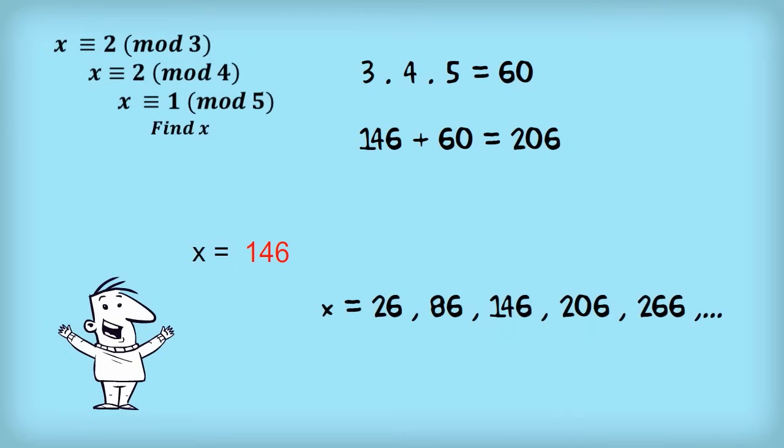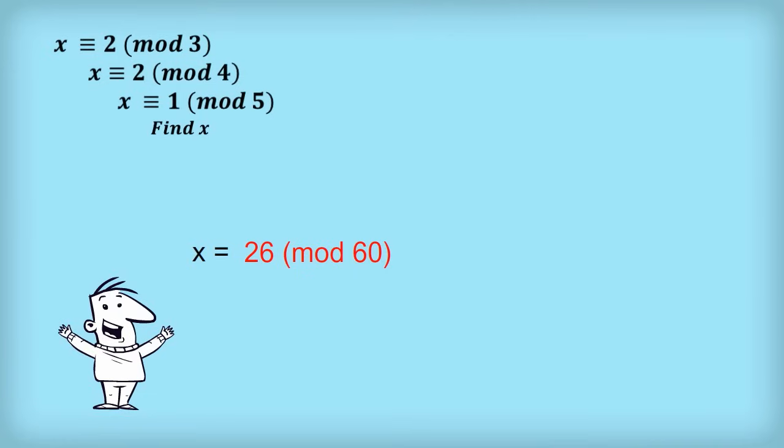So x is actually equivalent to 146 mod 60. That's the answer. Now, 146 is equivalent to 26 mod 60, so a nicer way to express the final answer is that x ≡ 26 (mod 60). And by the way, there are no other answers.